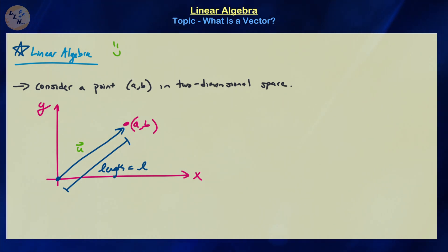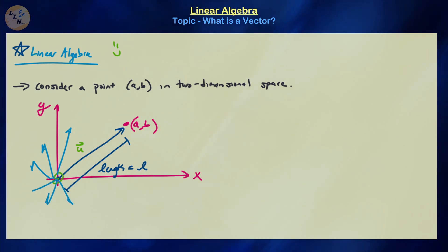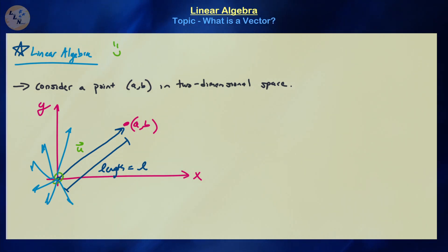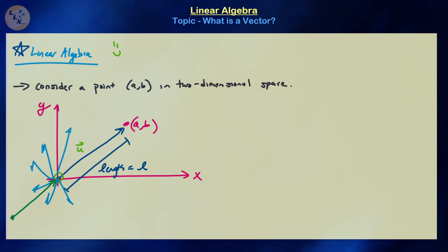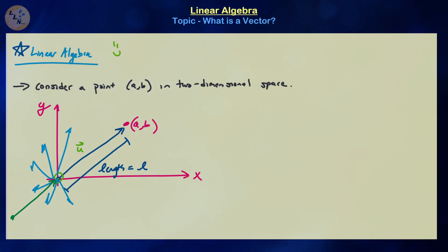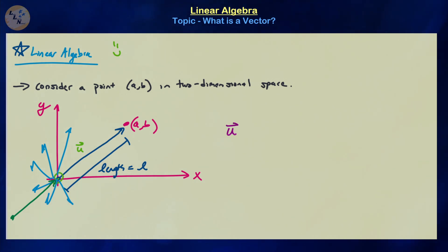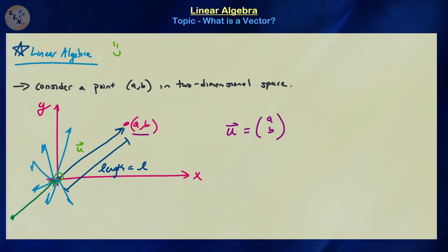The vector u points in some particular direction. For example, it has a base point of the origin. If we want some particular vector in the direction of (a, b) with a particular length, technically that vector would also work, or this vector down here would also work as well — as long as it's pointing towards that particular point (a, b) and has the same exact length, they are the same vector. We represent that vector as u, and that's going to be equal to (a, b), where that point represents the endpoint if you were to use the base point as the origin.